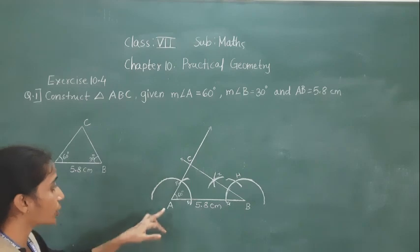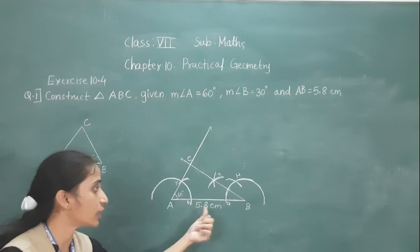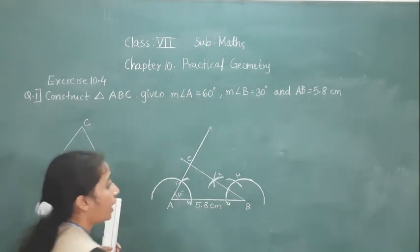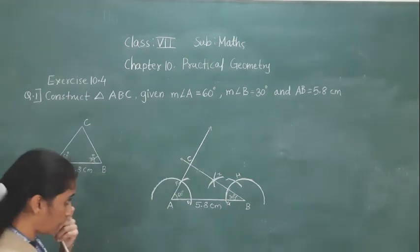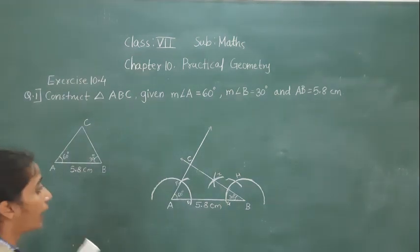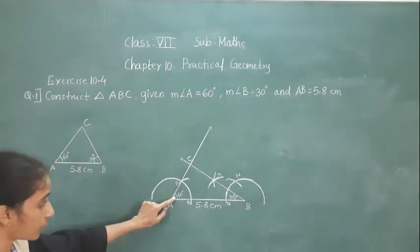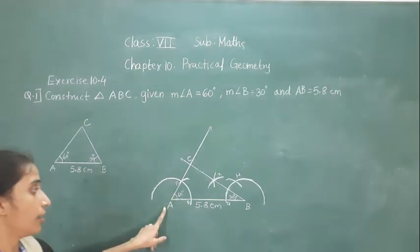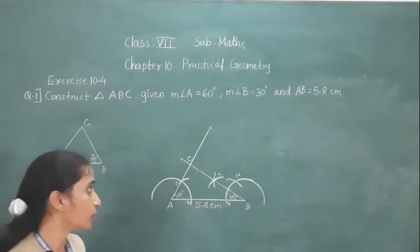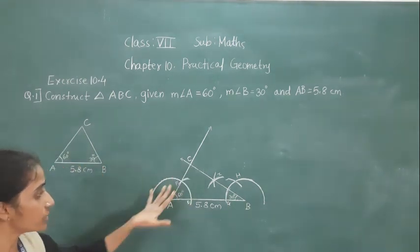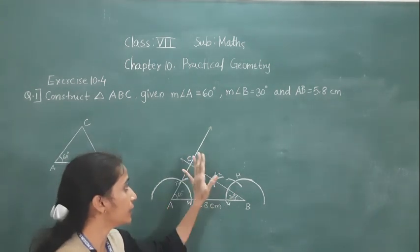So we got angle ABC. AB is 5.8 centimeters, angle B is 30 degrees, and angle A is 60 degrees. We got the complete triangle ABC with the given measurements.